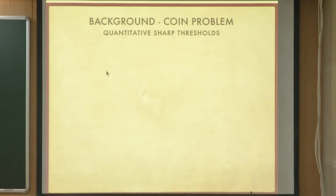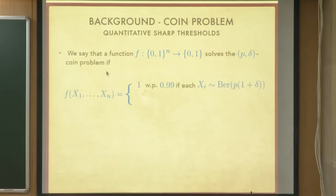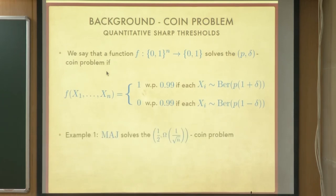Here is some relevant background. I am defining a Boolean function on n bits and I say it can solve the p-delta coin problem if it can distinguish between coins of bias slightly less than p and slightly more than p. Formally, if I give it independent Bernoulli random variables of bias p times 1 plus delta it mostly outputs 1, and if I give it bias p times 1 minus delta it mostly outputs 0. On the face of it this does not look hard — you count — but in AC0 you cannot really count, these things are not possible. Just to make that formal: the majority function solves the half-comma-1-over-root-n coin problem.